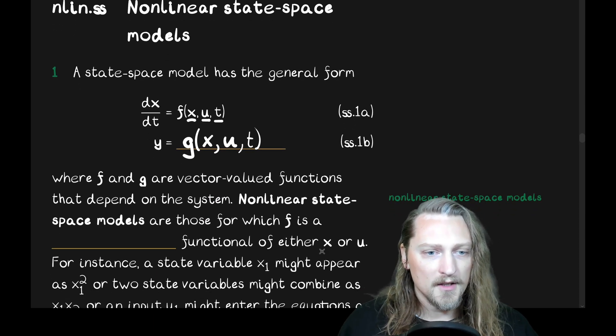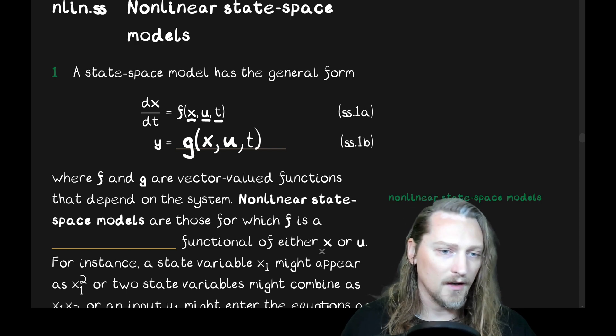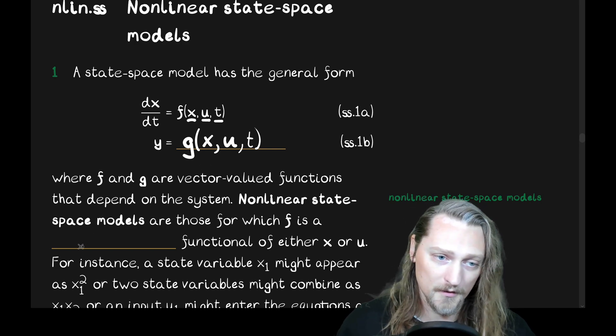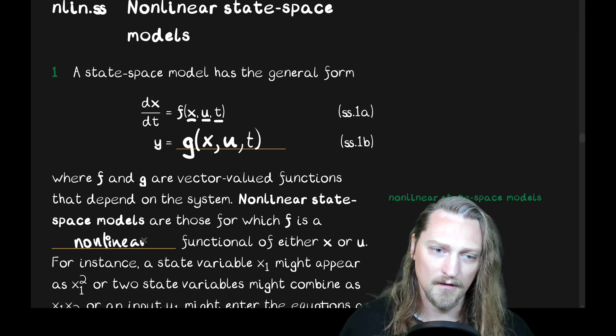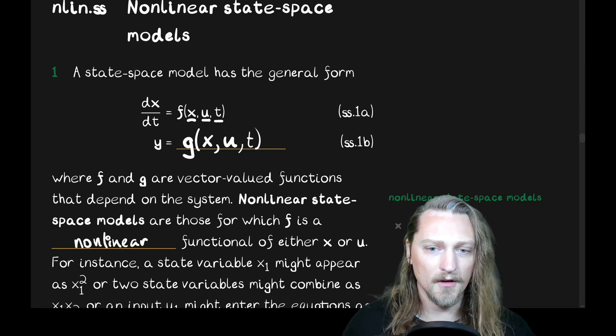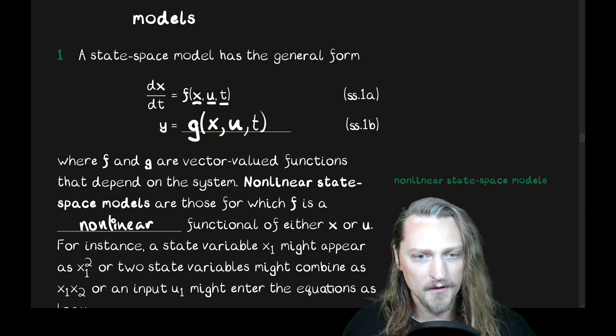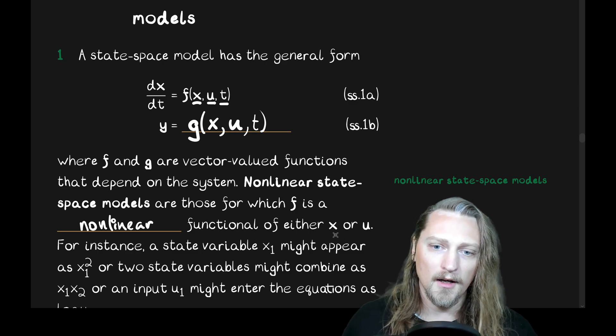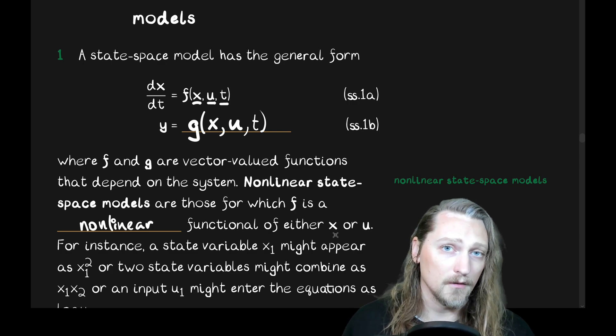Nonlinear state-space models are those for which f is a nonlinear functional of either x or u. A functional is a function of functions, so a functional of x or u, where x and u are technically vector-valued functions themselves.